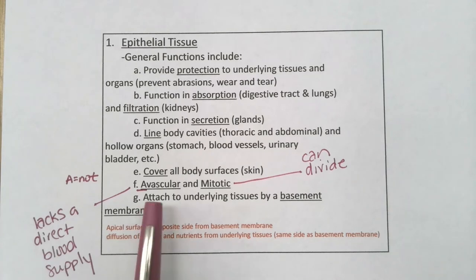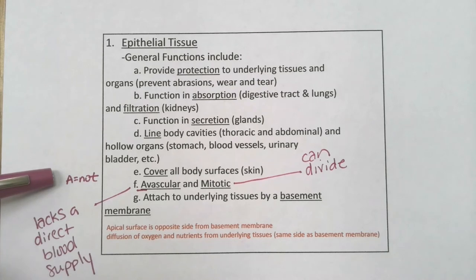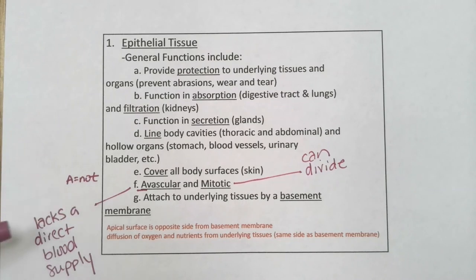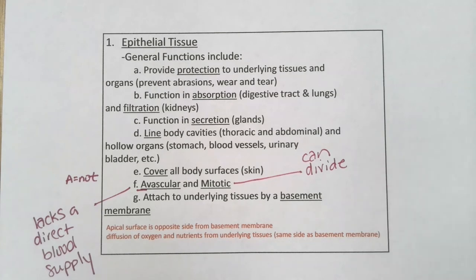All epithelial tissue is avascular and mitotic. The prefix 'a-' means 'not' or the opposite — that's a good thing to write down if you don't know that prefix already. Prefixes, roots, and suffixes are worth writing down for vocabulary building. Avascular means the tissue lacks a direct blood supply. Mitotic means those cells can actually divide — some mature cells are amitotic and cannot divide, but epithelial tissue can.